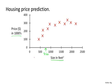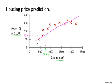One thing a learning algorithm might be able to do is put a straight line through the data, and based on that it looks like maybe the house can be sold for about $150,000. But maybe this isn't the only learning algorithm you can use. For example, instead of fitting a straight line to the data, we might decide it's better to fit a quadratic function or a second-order polynomial to this data, and if you do that and make a prediction, it looks like maybe they can sell the house for closer to $200,000.